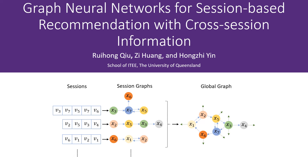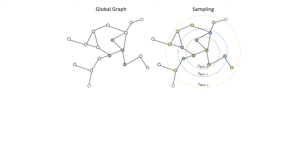Therefore, we use a directed graph to represent the session. Because there are many shared items between different sessions, we can connect these session graphs together into a global graph. The global graph naturally contains the cross-session information by its linkage. Based on the global graph and the input session graph in green nodes, we can sample a broad connected session graph by different neighbors.